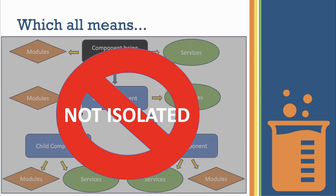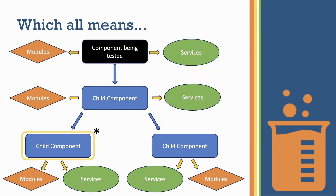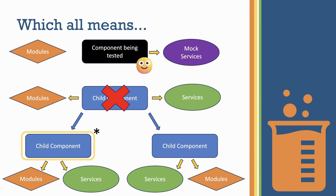Speed aside, this also means that the test isn't isolated. Additions to a child component's dependencies will nearly always result in every parent component's test failing until they have also accounted for the change. On top of that, if the child component's behavior changes, any parent tests that rely on that behavior will have to be corrected. If it were an isolated test, that interaction would be controlled by the test itself, and so wouldn't break.